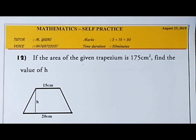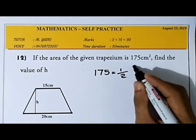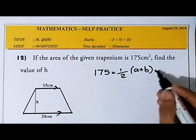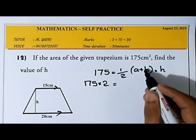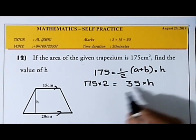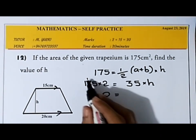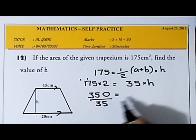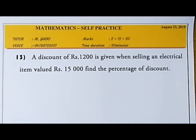The area of the trapezium is 175. The formula is ½ × (a + b) × h, where a + b is the sum of the parallel sides: 15 + 20 = 35. So 175 = ½ × 35 × h. Moving the ½ gives 175 × 2 = 350. Then 350 ÷ 35 = 10. The perpendicular height is 10 centimeters.